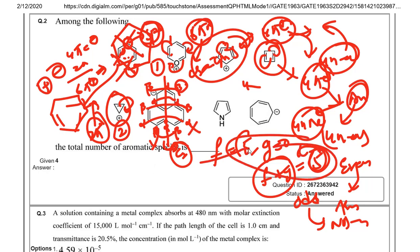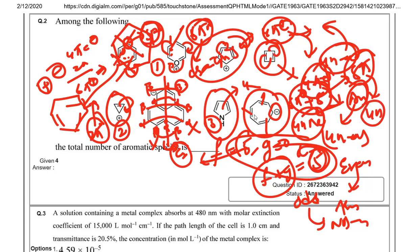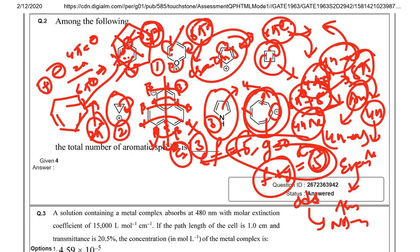Whenever f + g equals an even number it is aromatic; whenever it is an odd number it is not aromatic. So f + g = 5 means it is not aromatic. The next structure with two pi electrons is aromatic following Hückel's rule. The last structure has three double bonds giving six pi electrons plus a negative charge, giving eight electrons total — following 4n — so it is anti-aromatic. Total aromatic compounds observed: three.